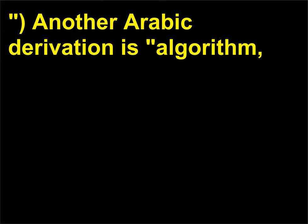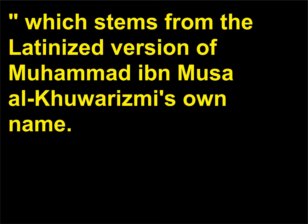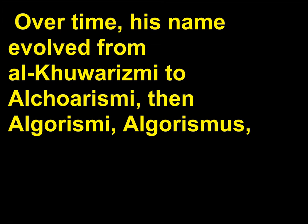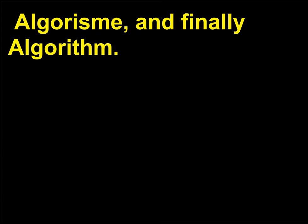Another Arabic derivation is Algorithm, which stems from the Latinized version of Muhammad ibn Musa al-Khwarizmi's own name. Over time, his name evolved from al-Khwarizmi to Algorismi, then Algorism, Algorisme, Algorithm, and finally Algorithm.